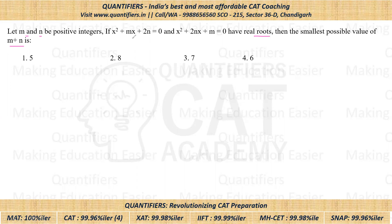So because it is having real roots, I hope all of you know that B² - 4AC should be greater than or equal to zero. So from the first equation, I can say that B² - 4AC, so that is M² - 4 into 1 into 2N should be greater than or equal to zero.